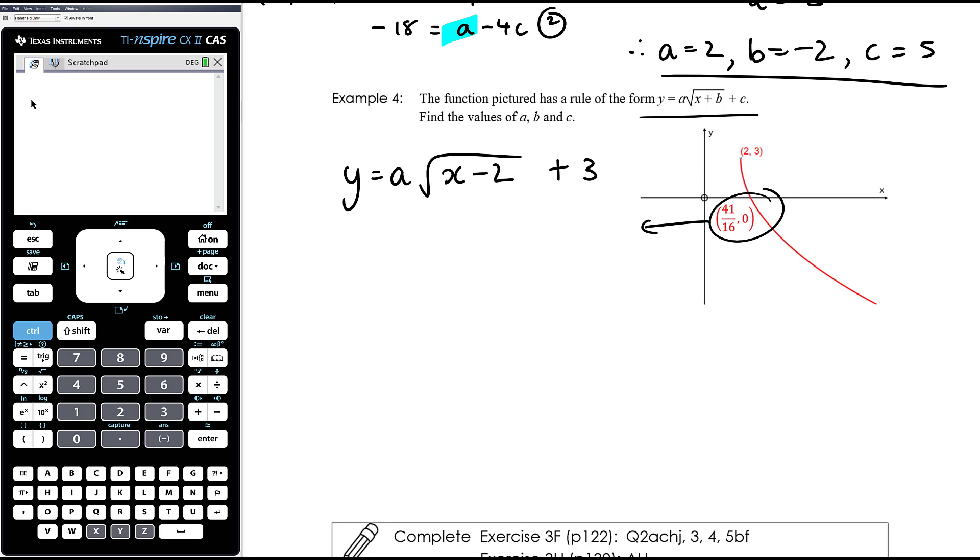So when x equals 41 on 16, y equals 0. 2 is 32 on 16. So 41 on 16 minus 32 on 16 is 9 on 16. Square root of 9 on 16 is 3 on 4. Now let's take away 3 while we're at it. And so then a will be equal to negative 3 divided by 3 quarters, which is times 4 thirds. And the 3s cancel out, and we just have a equals negative 4.